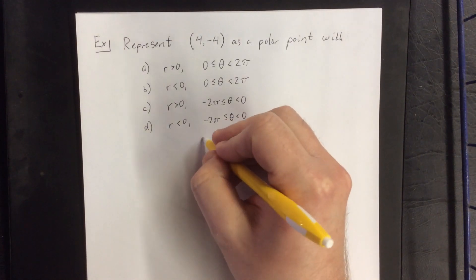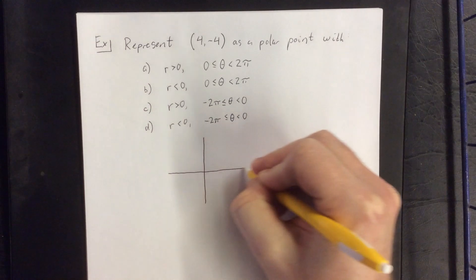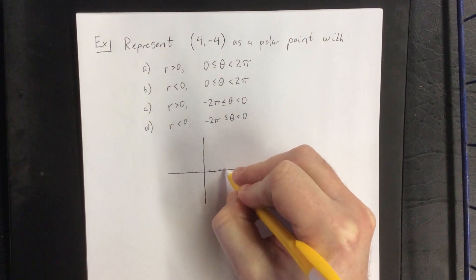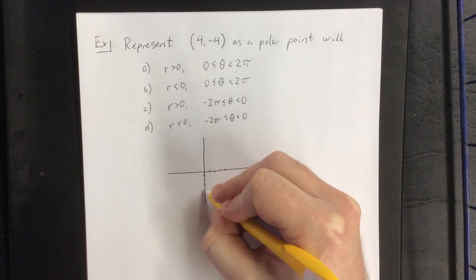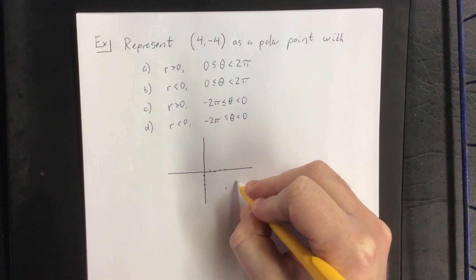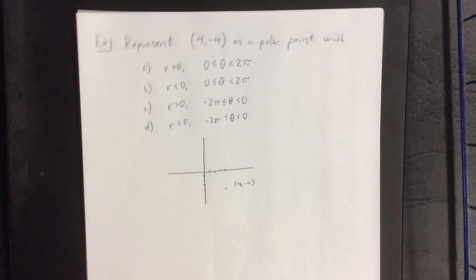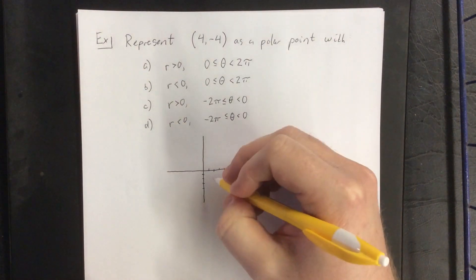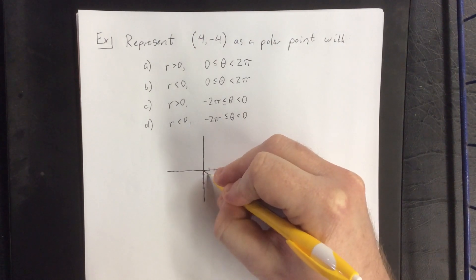The first thing I'm going to do is sketch my Cartesian point. We're going to go 4 units in the positive x direction and 4 units in the negative y direction. This point would be (4, -4). Now, in polar coordinates, we would be connecting directly to this point from the pole.